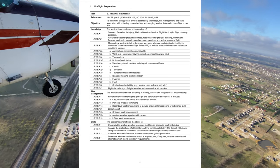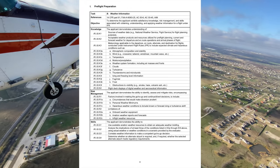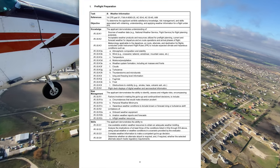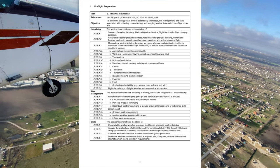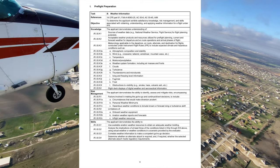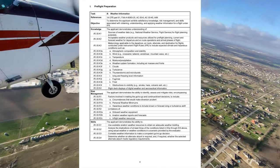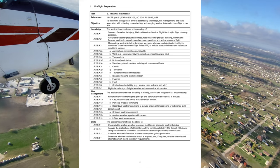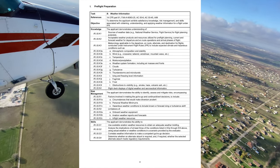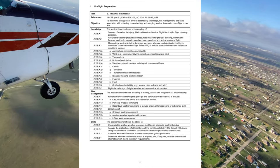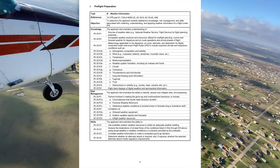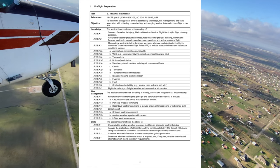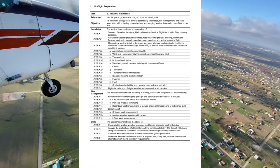Other aviation weather charts include: a surface analysis chart, which is a surface-level weather observation depicting low pressure, high pressure, and fronts. The significant weather prog chart provides a forecast of aviation weather hazards for pre-flight briefings. And the convective outlook chart provides a graphical outlook for severe weather in the week ahead.